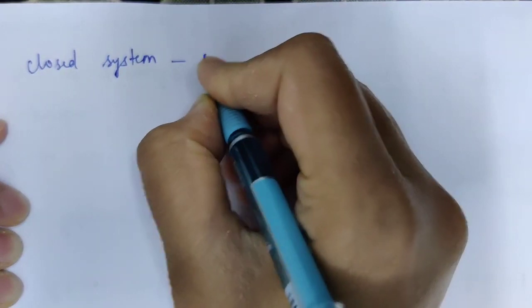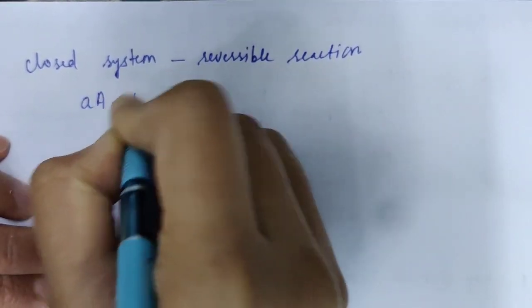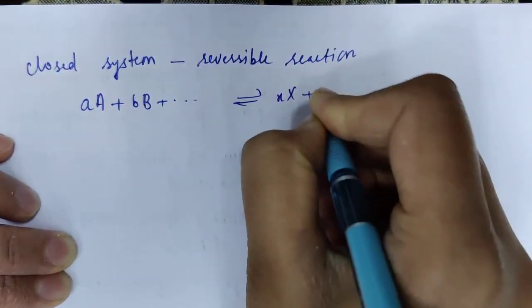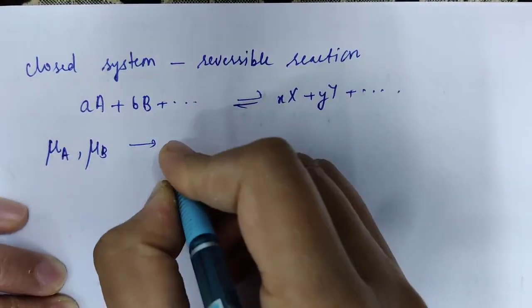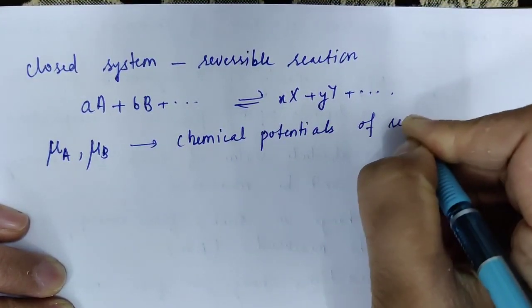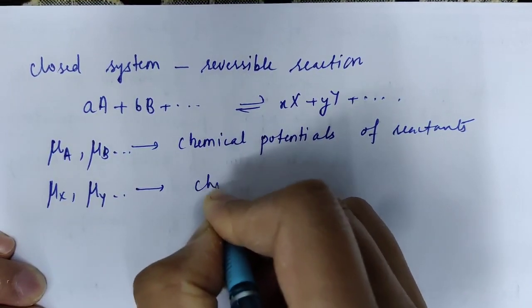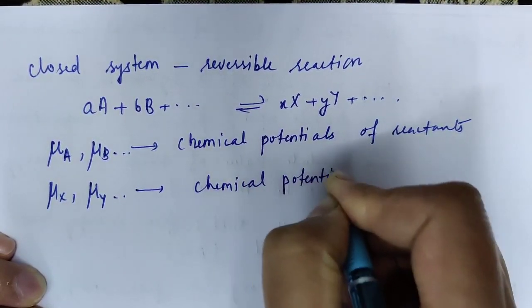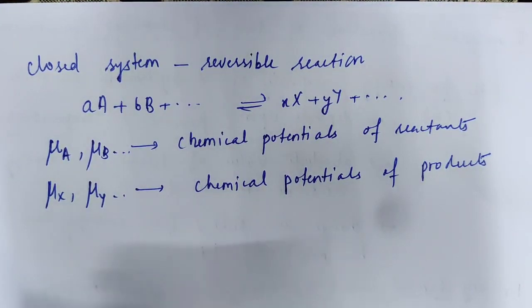Now let us consider a closed system having a reversible reaction. The reaction is: aA plus bB and so on to give xX plus yY and so on. Here mu A and mu B are chemical potentials of reactants, and mu X and mu Y are chemical potentials of products.